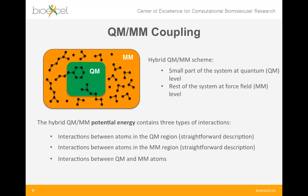In the QM/MM approach, the system is split into two parts: a small QM part treated at an accurate quantum level, and the rest at a lower level of theory such as force field level. Special attention has to be paid to coupling the two regions. In particular, the QM/MM potential energy of the system contains three types of interactions: interactions between atoms in the quantum region, interactions between atoms in the classical region, and interactions between QM and MM atoms. According to how these last interactions are handled, QM/MM schemes can be grouped into subtractive and additive schemes.